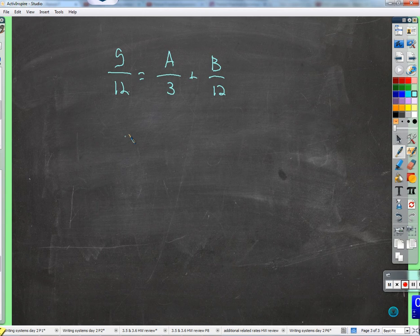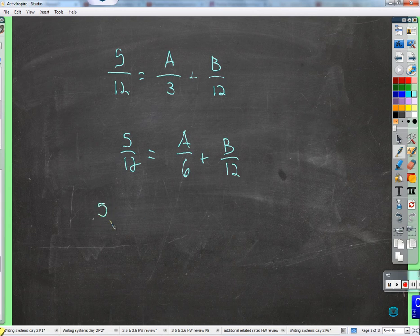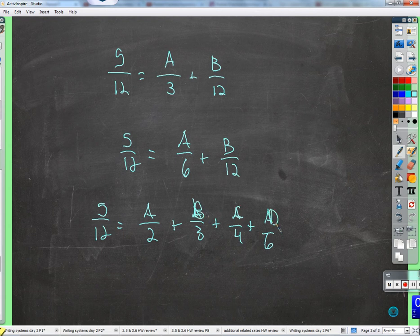I could also do 5 over 12 is equal to a over 6 plus b over 12. And that is possible. I could factor it all out. So it's 5 over 12 equals a over 2 plus b over 3 plus c over 4 plus d plus e over 12, right? So there's lots of different ways to write this out.